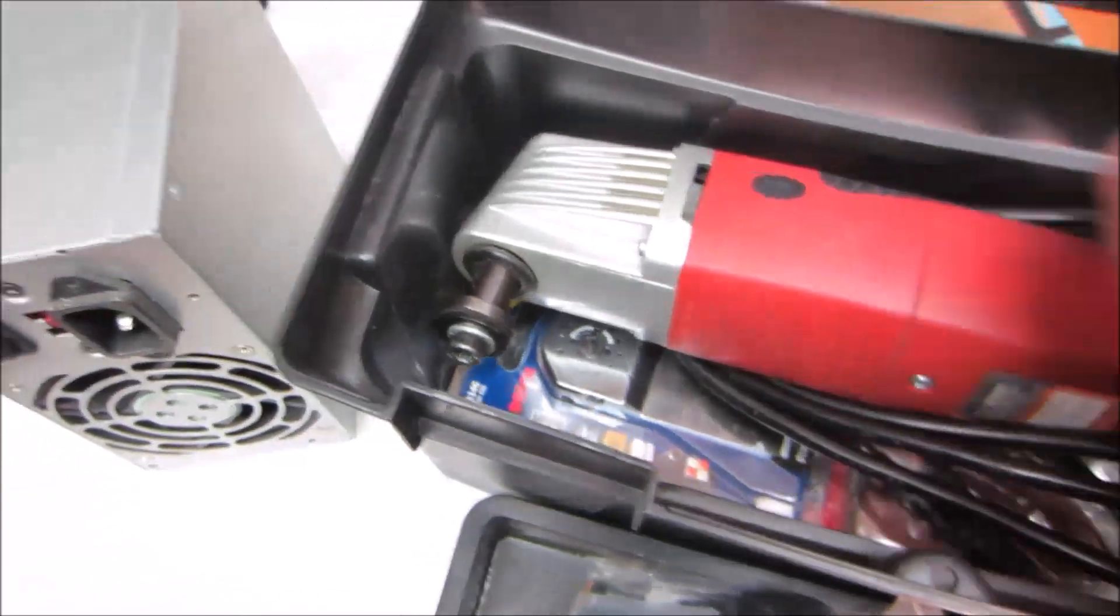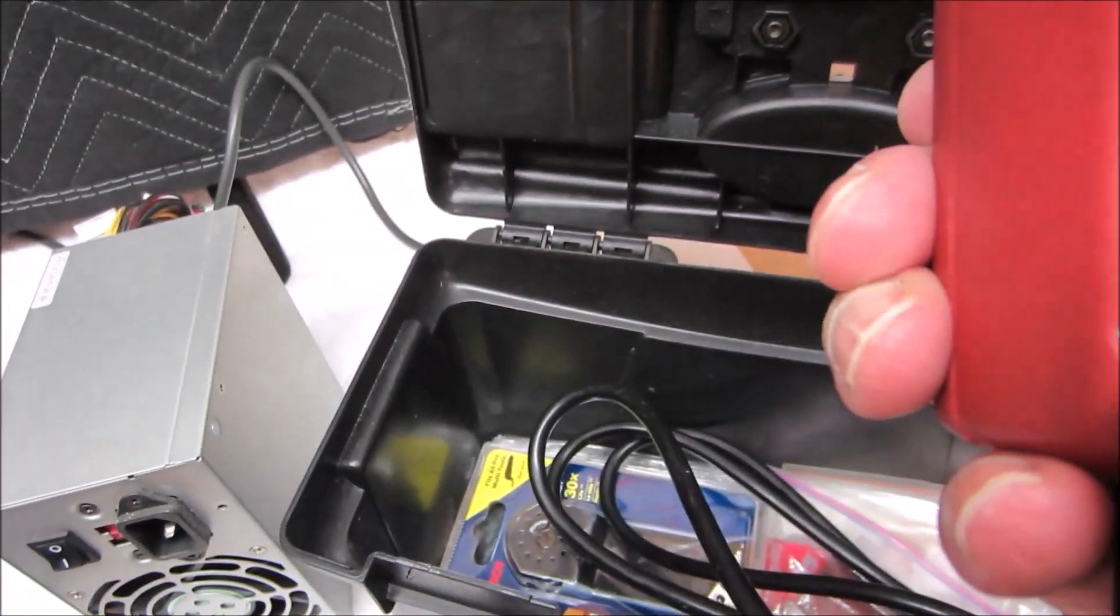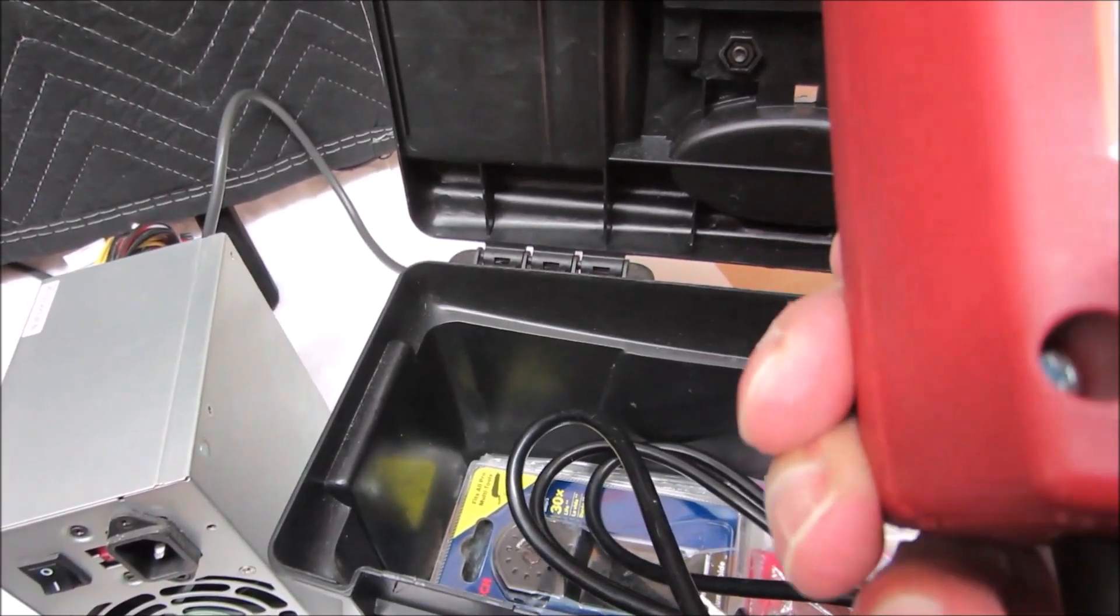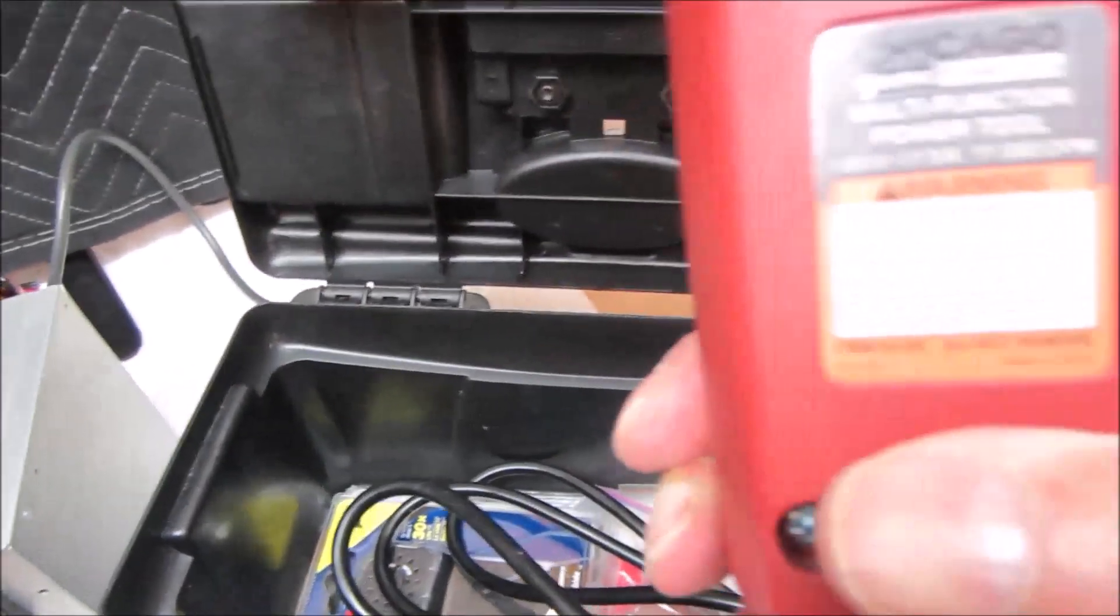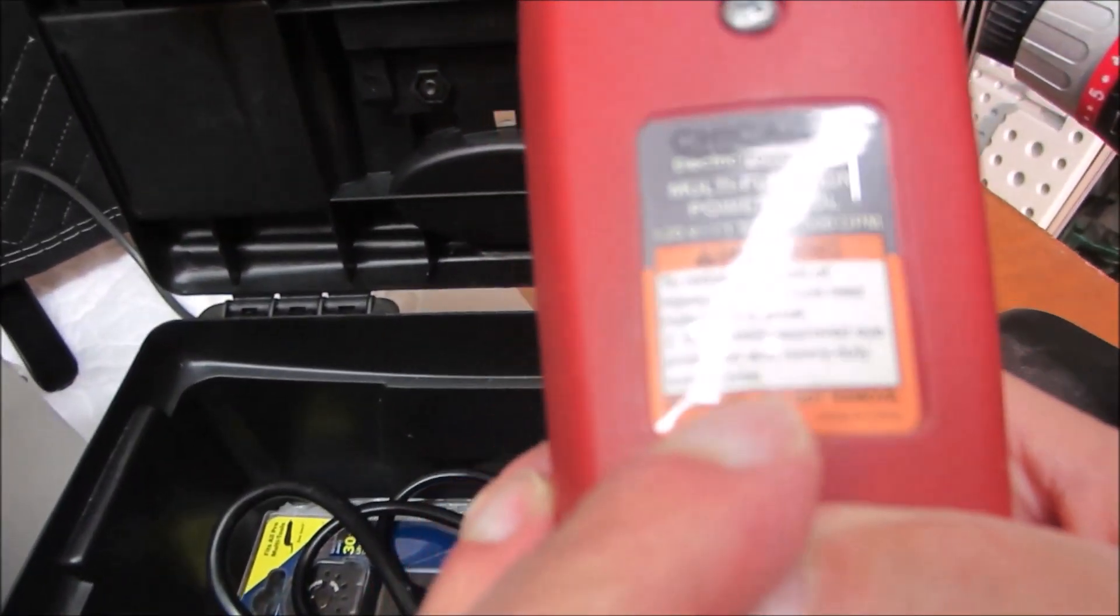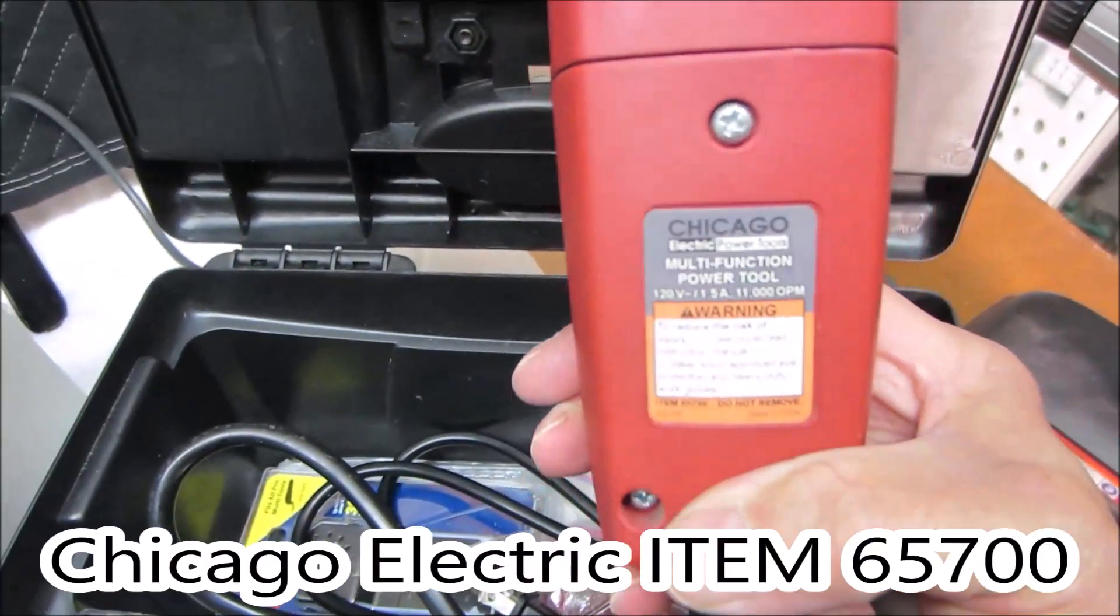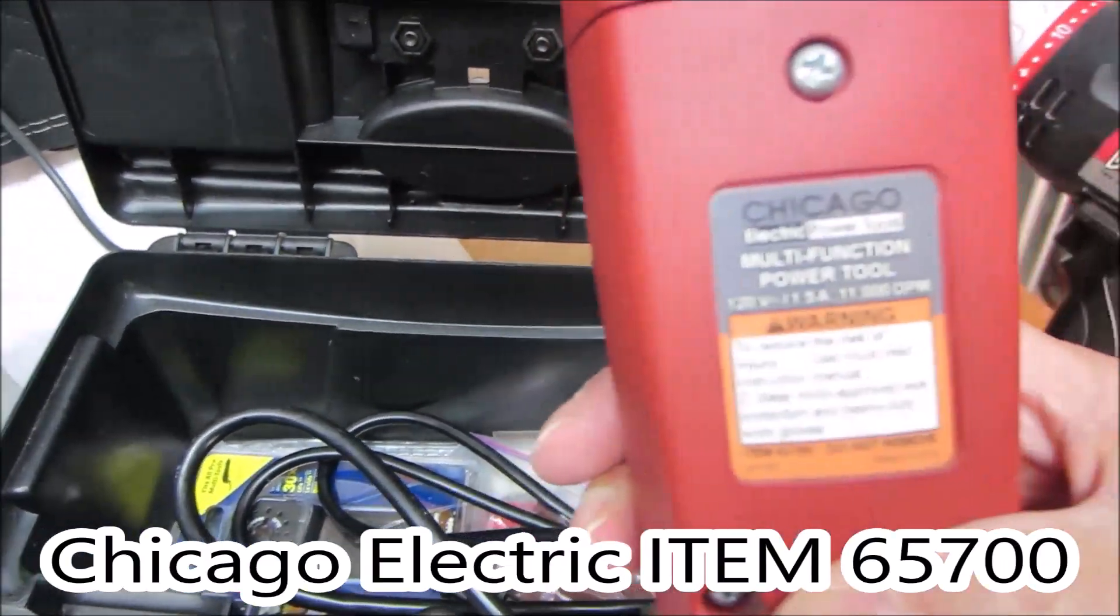So it's really a very straightforward job provided you have an oscillating tool. I don't think you can get this exact one anymore. This one is item number 65700. I'm sure they have a replacement model today.